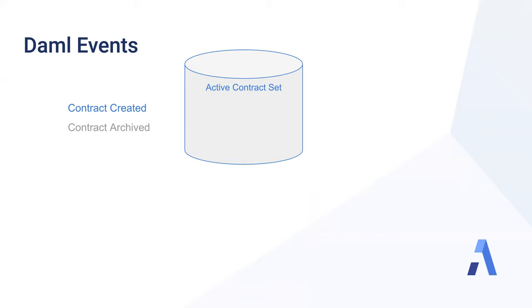Here's an example of why create and exercise choice are simpler than explicitly creating and archiving contracts. Let's say I have a car contract on the ledger representing ownership of a physical car. This contract specifies that I have a choice to transfer ownership of my car to a new buyer. When I submit the command to transfer ownership, many events can occur simultaneously. DAML is smart enough to translate my simple command into the many events that need to happen. For example, it will create a new car contract with the buyer as the new owner, implicitly archiving the existing contract since I'm no longer the owner, and exercise choices on other contracts to notify the motor vehicle registry and cancel my insurance contract with the insurance company.